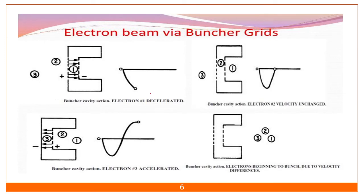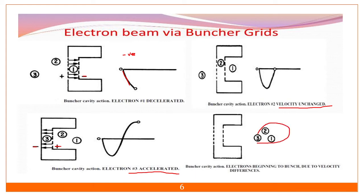Suppose the fastest electron — electron one — has a negative potential applied to it. So if we apply a negative field to a negative electron, it will get decelerated. Whatever electron is having higher velocity gets decelerated. The second electron — we are not doing anything; its velocity is unchanged. In the third case, we are changing the polarity of the buncher cavity to positive potential, so the slow electron gets accelerated. These three cases form the bunching process.